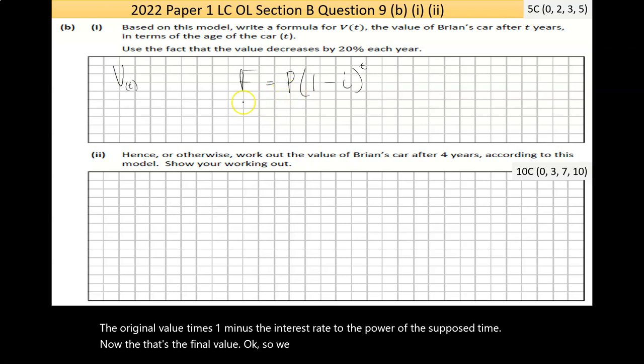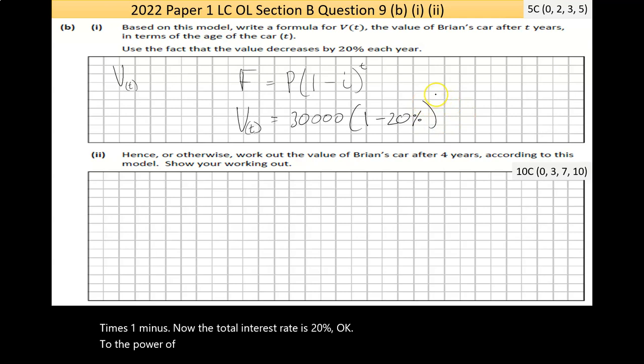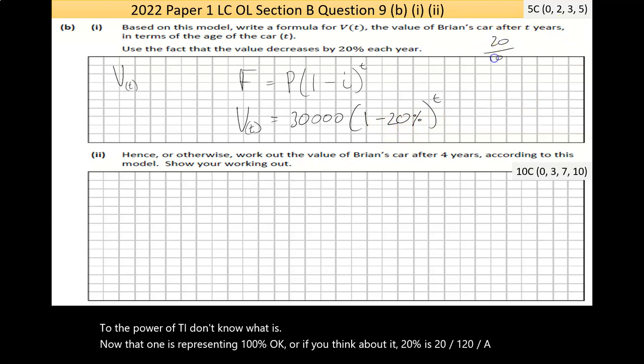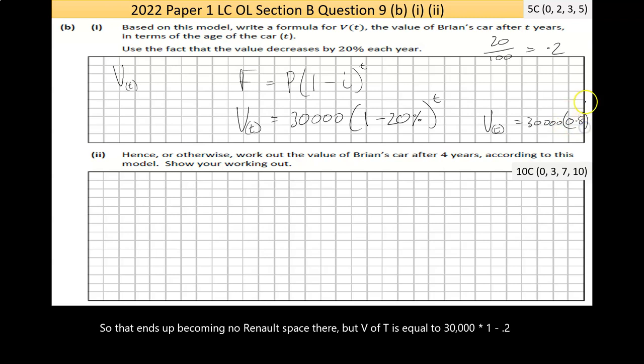I could say that the value, in function notation V(T), is equal to my original value of 30,000 times (1 minus, now the total interest rate is 20%) to the power of T. That 1 is representing 100%. Or if you think about it, 20% is 20 over 100. 20 over 100 is the same thing as 0.2. So V(T) is equal to 30,000 times 0.8 to the power of T.